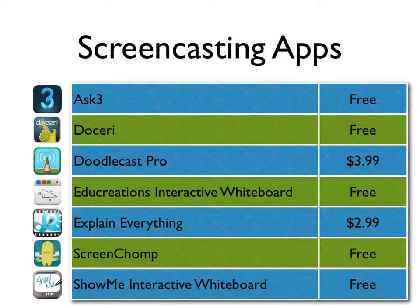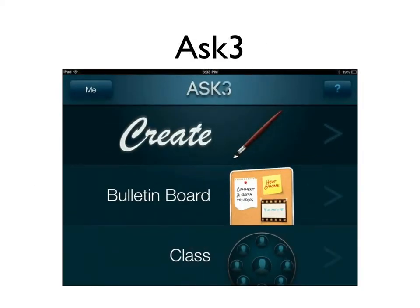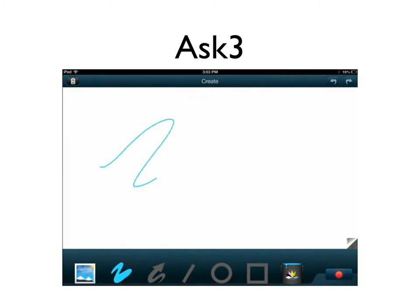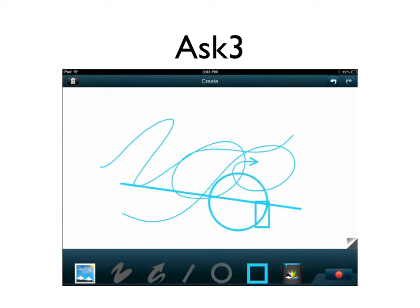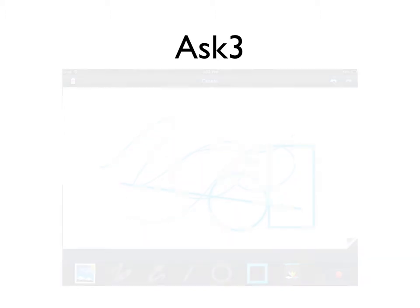Option two is to use screencasting apps available within the App Store. I suggest seven options on screen, and they are fairly reasonably priced — the majority are free, with two costing either three or four dollars. The first is Ask 3, created by the same people who make Camtasia. It has a nice simple interface and allows you to annotate material or construct free-form animations easily. The downside is it pushes you into the Ask 3 portal as the interface for students to view recordings, which I see as less than ideal.